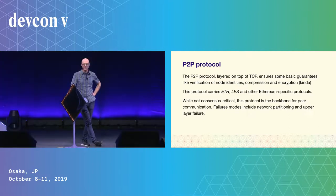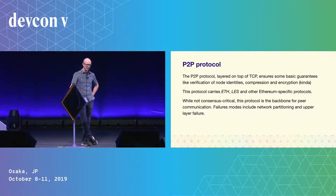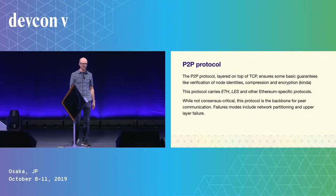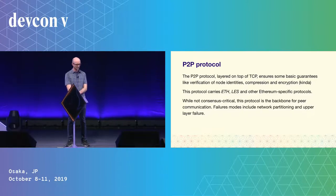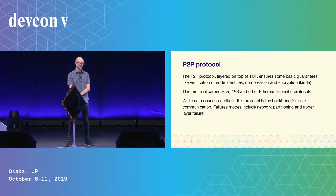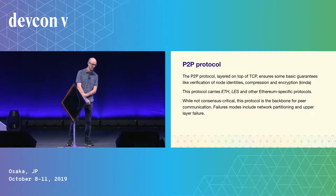The ETH protocol operates on top of the peer-to-peer protocol, the P2P protocol, which sits on top of TCP. It has basic guarantees and verifies node identities — not consensus critical, but it's the backbone for the upper layer peer-to-peer protocols. If this were to fail, you'd have the same failures as the ETH protocol.